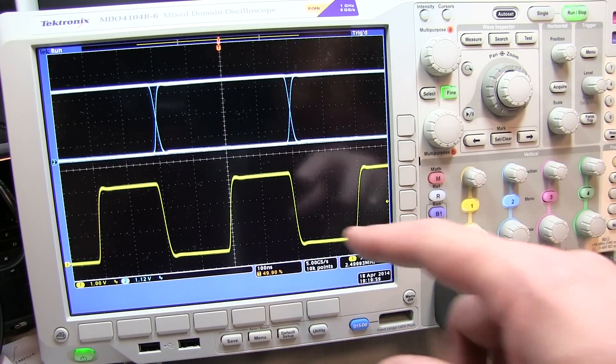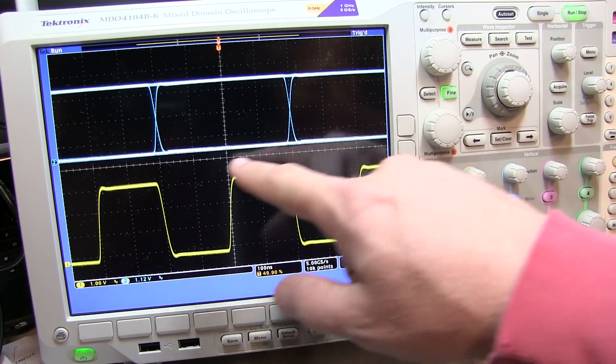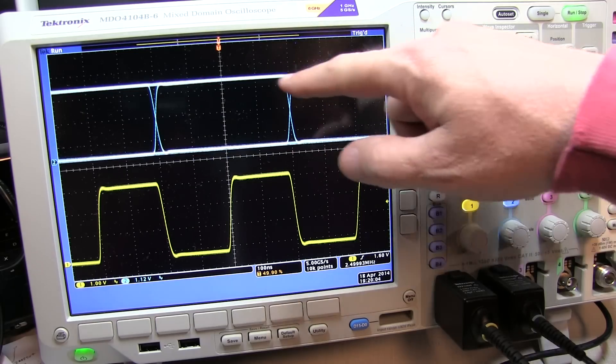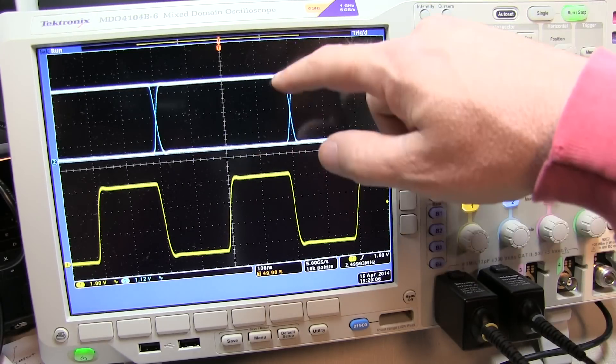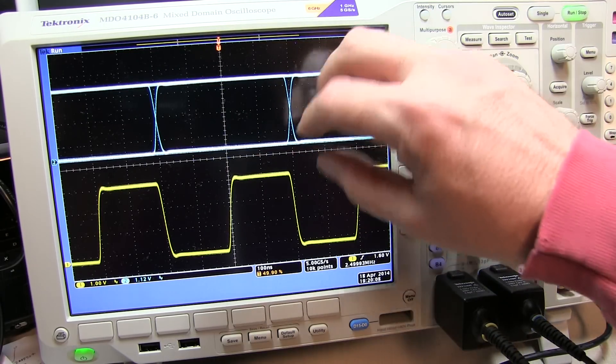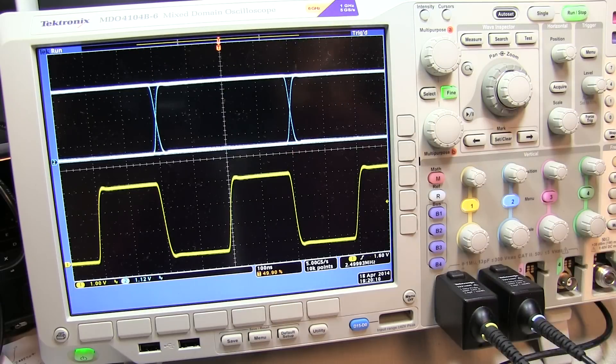So in summary, the eye pattern, again, this very ideal eye pattern shows us that I've got very clean 0 and 1 levels, very clean rising and falling transitions. This eye is as open as it can possibly be. This is really kind of an ideal eye pattern.